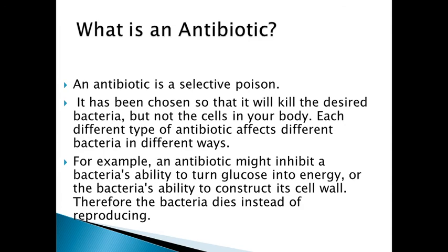There is a difference between antibiotic and antimicrobial agents. An antibiotic is basically of microbial origin and is a selective poison — it is chosen so that it will kill the desired bacteria but not the cells in your body. Each different type of antibiotic affects different bacteria in different ways. For example, an antibiotic might inhibit a bacterium's ability to turn glucose into energy or to construct its cell wall, and therefore the bacterium dies instead of reproducing.